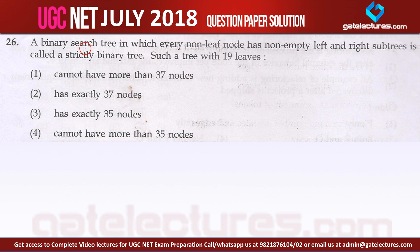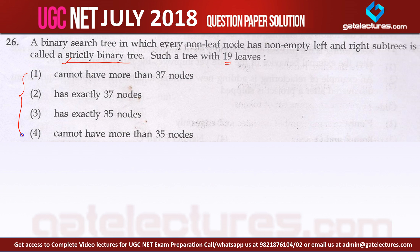Now let us look at question number 26, which is extended to the strict binary trees — again from the subject algorithms. They are saying a binary tree in which every non-leaf node has non-empty left and right sub-trees is called a strict binary tree. Now such a tree with 19 leaves — how many nodes exactly does it have?